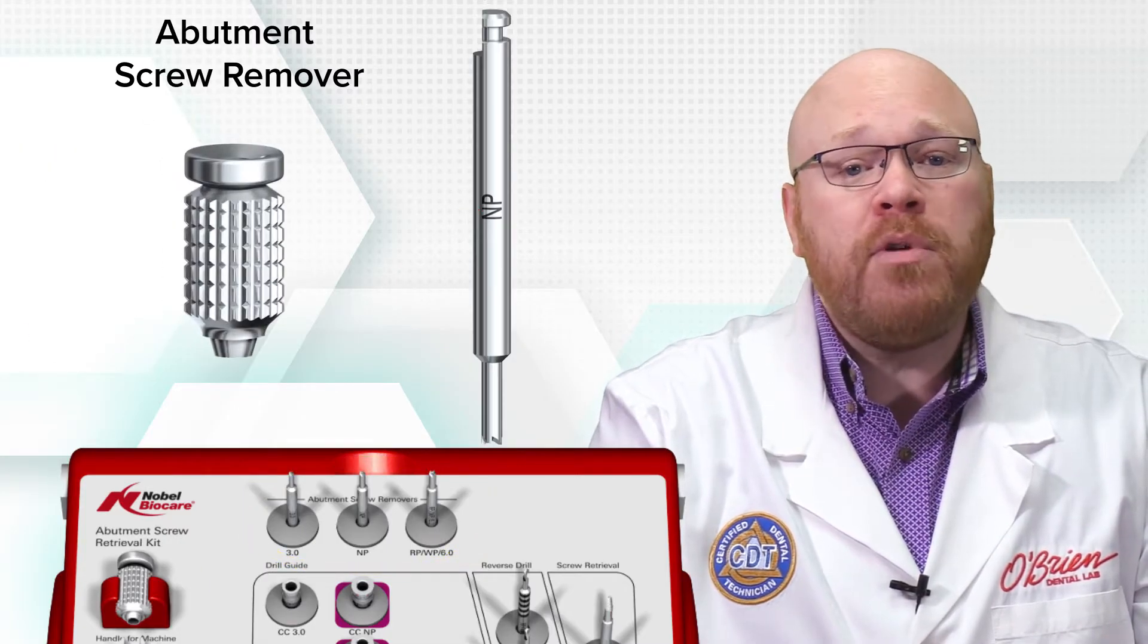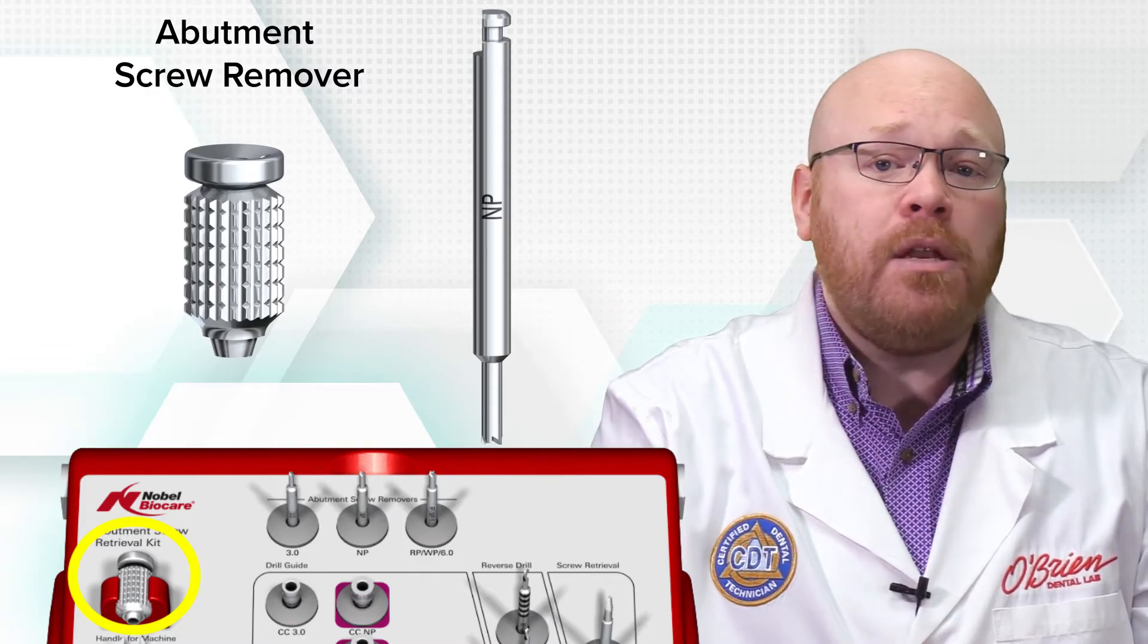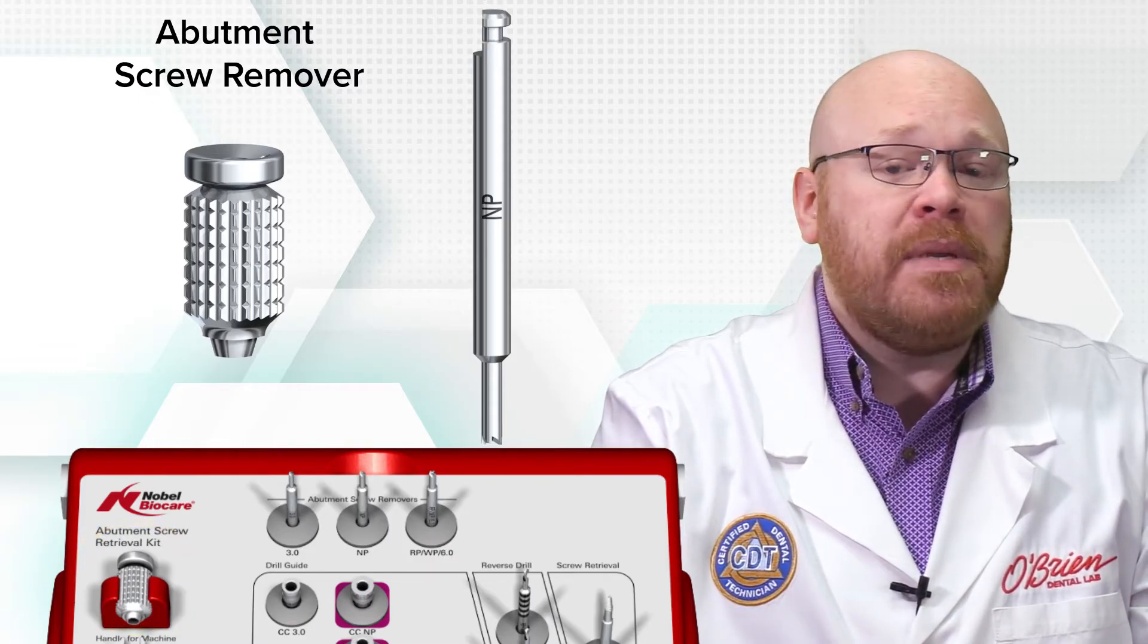After you've chosen the correct screw remover, you'll attach it to the short handle which is located on the top left of the kit, or you can attach it to a handpiece if you prefer.